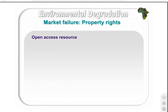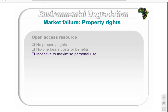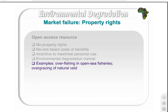Open access resources exist where there are no existing property rights, meaning no one bears the costs or benefits of sustainable management. This creates a high incentive for individuals to maximize personal use and extract resources in an inefficient and unsustainable fashion. As a result, environmental degradation is the norm. Examples include overfishing in open sea fisheries and overgrazing of natural veld.